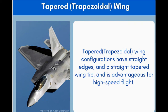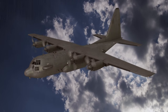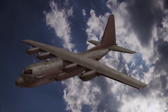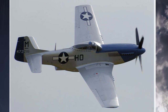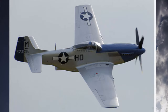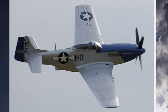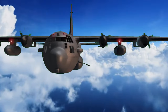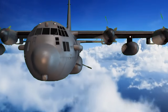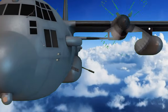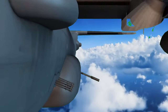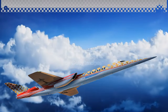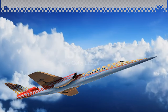1. Tapered Trapezoidal Wing Design. The tapered wing is a slightly modified variation of the rectangular wing. Trapezoidal wing configurations have straight edges and straight tapered wing tips, and are advantageous for high-speed flight. A tapered wing promotes low drag as well as superior durability during rapid air travel, so it was a popular choice in the early days of supersonic aircraft technology. This aerodynamic approach provided impressive performance and was implemented by several aircraft models.